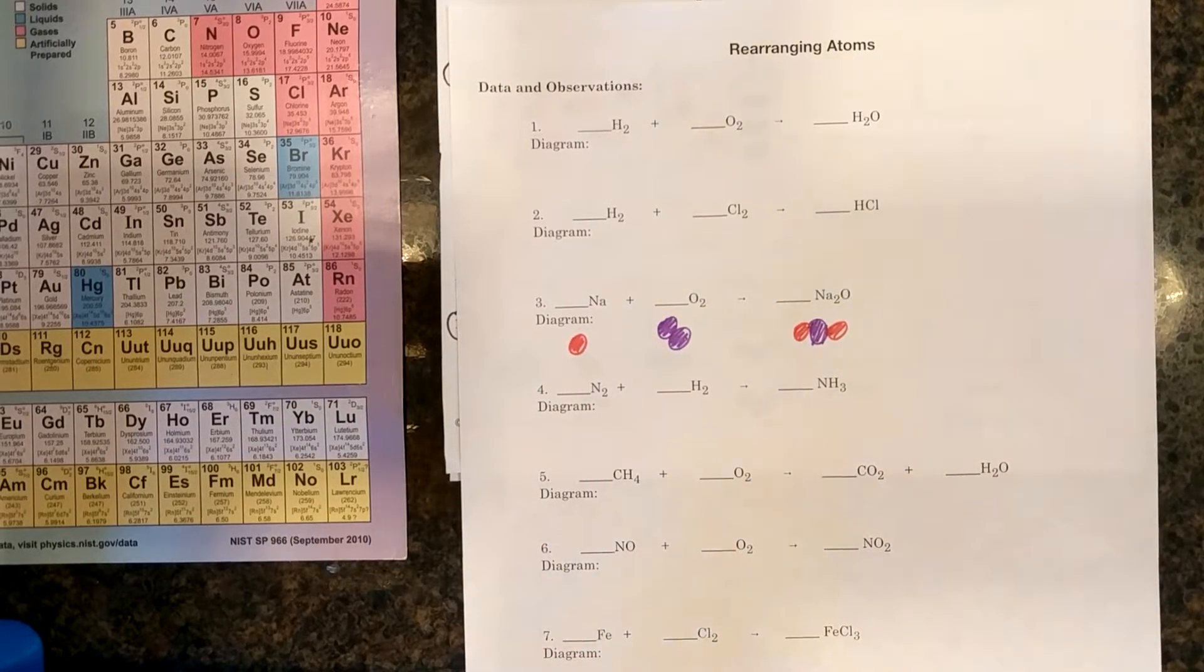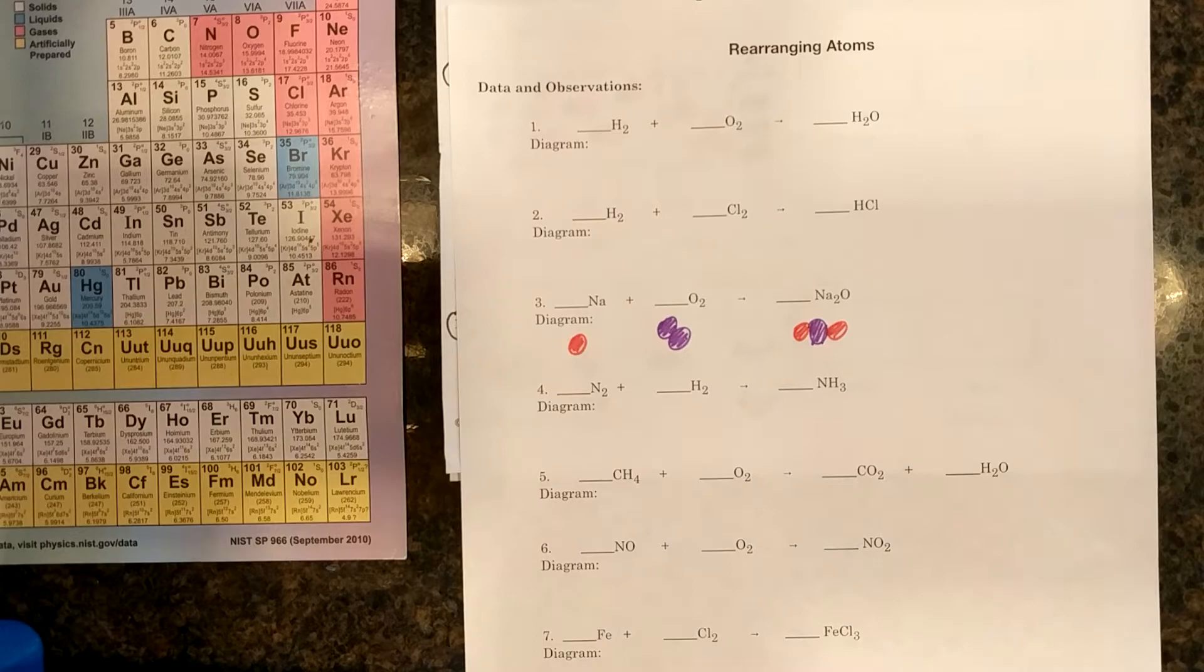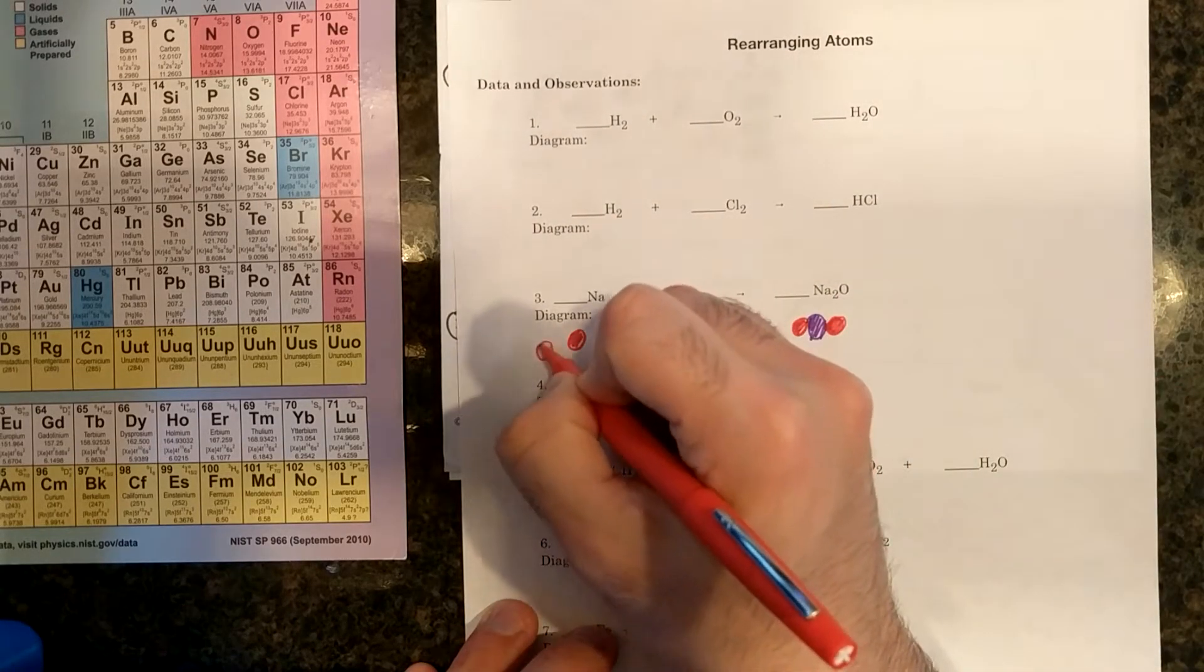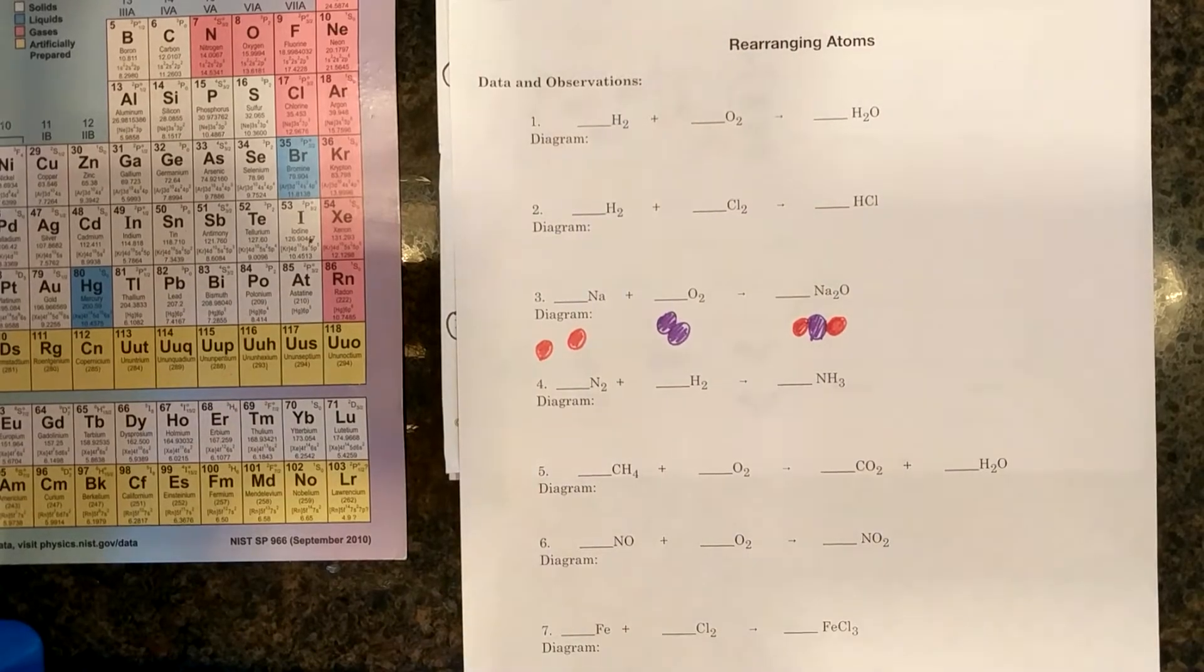Now in looking at this, automatically I could tell that I don't have enough oxygen atoms on the right side or I don't have enough Na atoms on the left side. You could choose which route you go. It does not matter. I'm going to go the route of, okay, I noticed that I have two Nas on the right and one on the left. I'm going to add an Na.